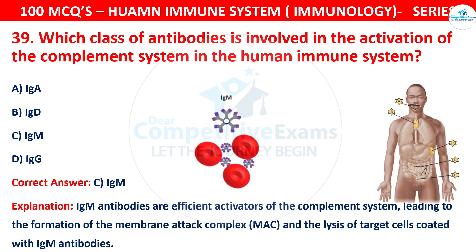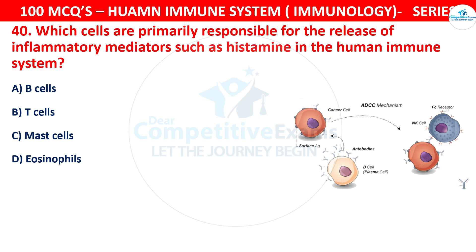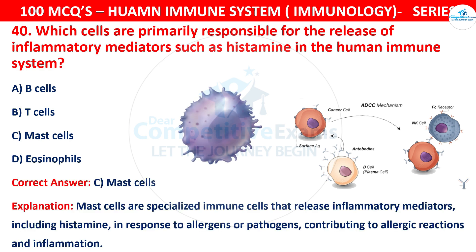Question 40: Which cells are primarily responsible for the release of inflammatory mediators such as histamine in the human immune system? The options are B cells, T cells, Mast cells, or Eosinophils. The correct answer is C, that is Mast cells. Mast cells are specialized immune cells that release inflammatory mediators including histamine in response to allergens or pathogens, contributing to allergic reactions and inflammation.